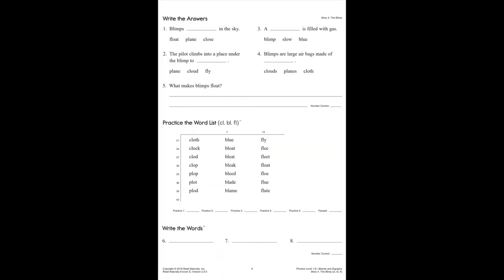Now, the questions. Number one: Blimps blank in the sky. Is it float, plane, or close? Number two: The pilot climbs into a place under the blimp to blank. Is it plane, cloud, or fly?